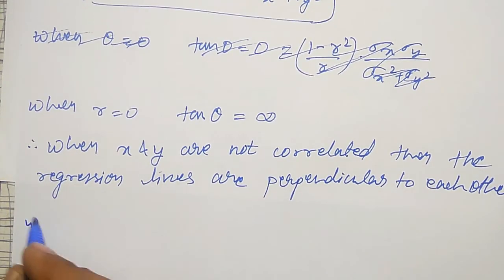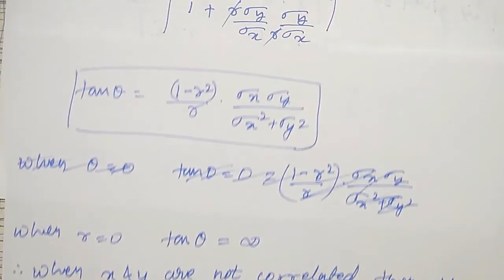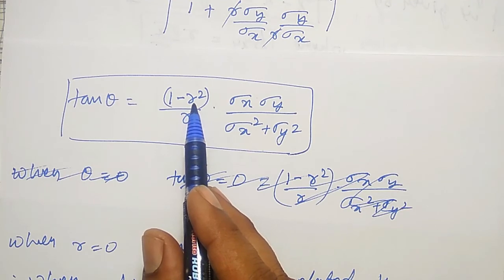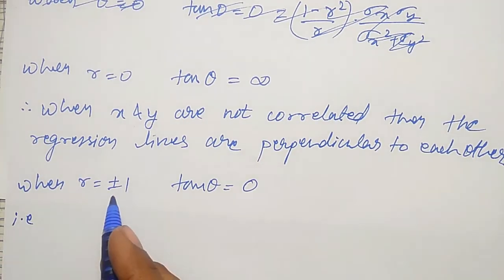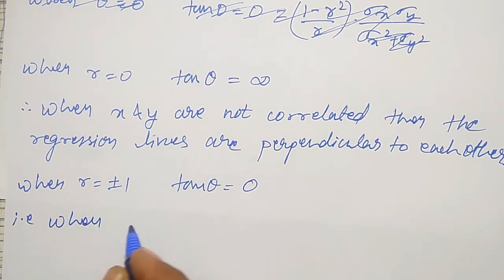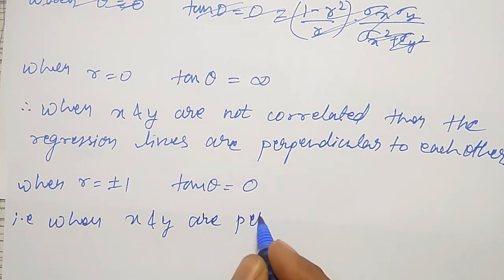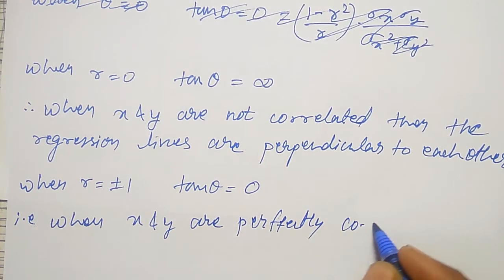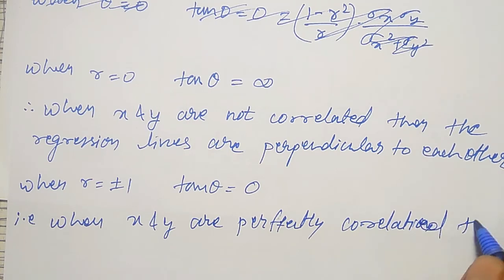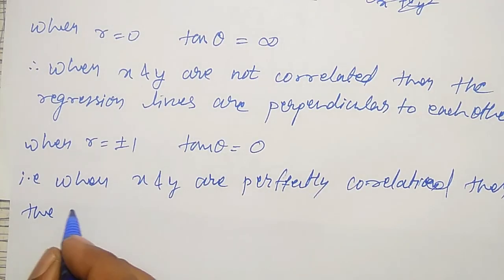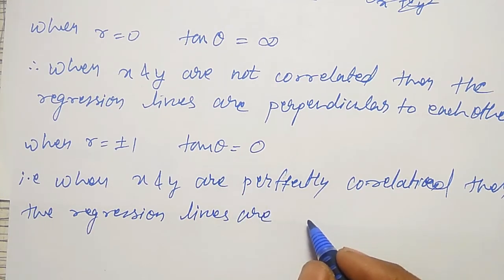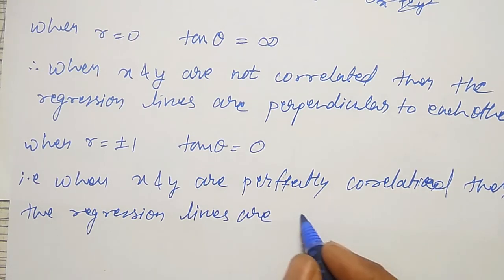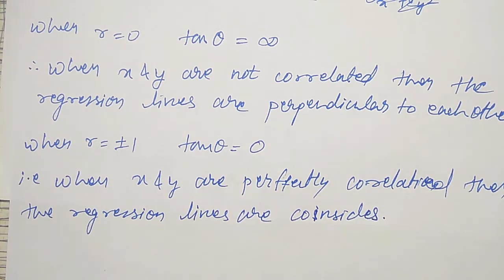The second case: when r equals plus or minus 1, in this expression 1 minus r squared becomes 1 minus 1, which is 0. So tan theta equals 0, meaning theta equals 0 degrees. This means when X and Y are perfectly correlated, the regression lines are parallel to each other or coincide.